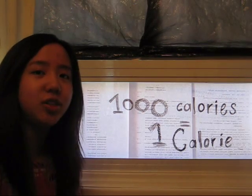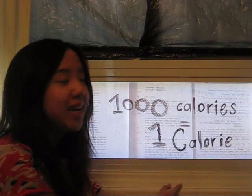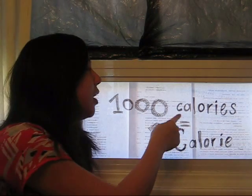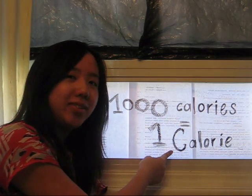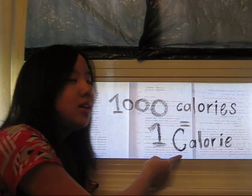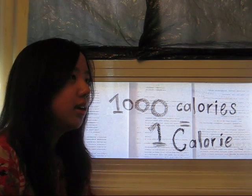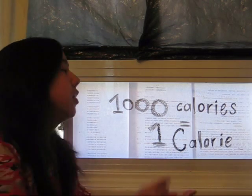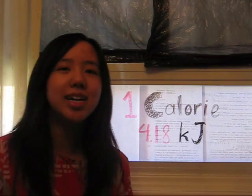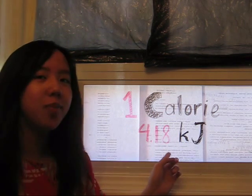Take a look at any nutritional label on a product sold in Canada. The word calorie has a capital C on the nutritional label. This is because there's a difference between the small c calorie and the big C calorie. One thousand small c calories is equal to one large C calorie. So if your juice box says you are eating 20 large C calories, you're actually eating 20,000 small c calories. Scientists have figured out that one large C calorie is actually equal to 4.18 kilojoules.